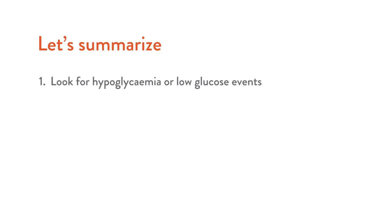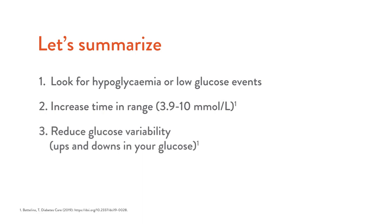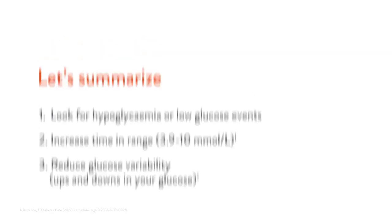Let's summarize. When reviewing your glucose readings, you want to look for hypoglycemia or low glucose events. Second, you want to increase your time in range. And third, you want to reduce your glucose variability — those up and down waves. Freestyle Libre 2 can quickly summarize your readings so you can find the answers you're looking for.